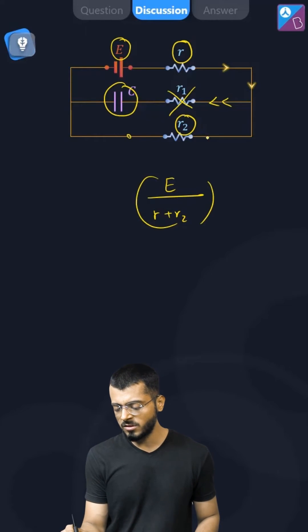And once we know the value of current through this resistance, the potential difference across this one is going to be R2 into the current through it. And once we know the potential difference across this arm, which is parallel to the capacitor arm.